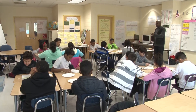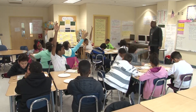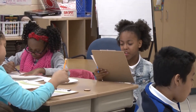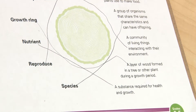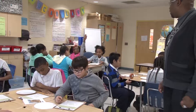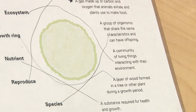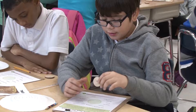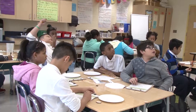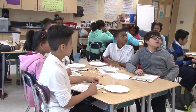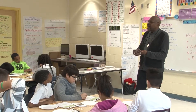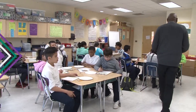Another definition: growth ring. A student defines it: a layer of wood formed in a tree or other plant during a growth period. Are growth periods always the same or can they fluctuate? Next: nutrient — a substance required for health and growth. How do trees get nutrients? From the soil. Water carries the nutrients to the tree. It can be nitrogen, phosphorus, calcium — different things that are used in trees.